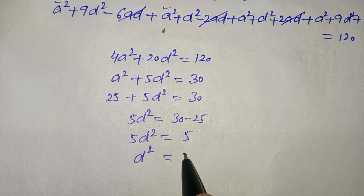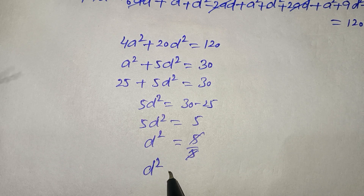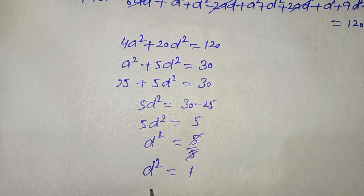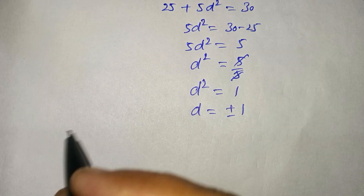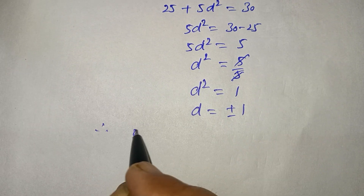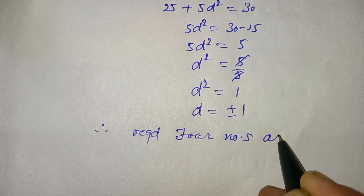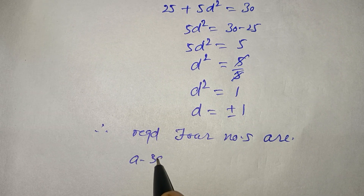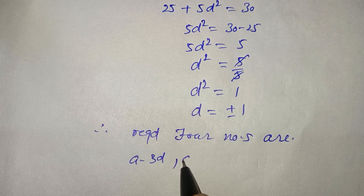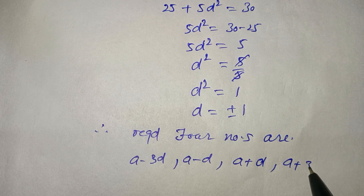Dividing 5 by 5, D squared equals 1, and therefore D equals plus or minus 1. Now I have 4 numbers. The required 4 numbers are A minus 3D, A minus D, A plus D, A plus 3D.